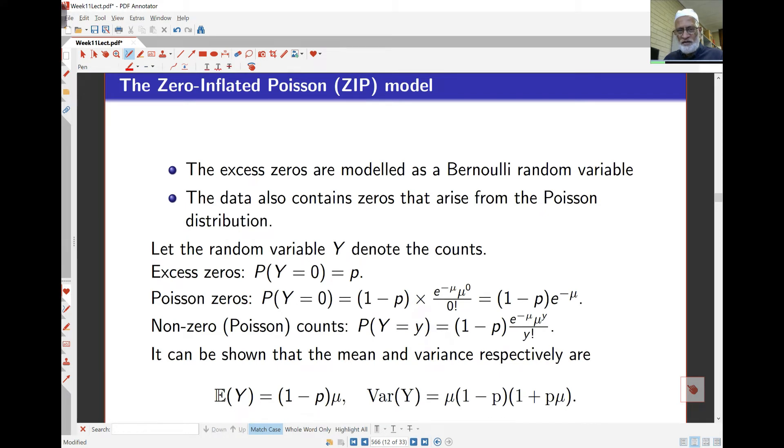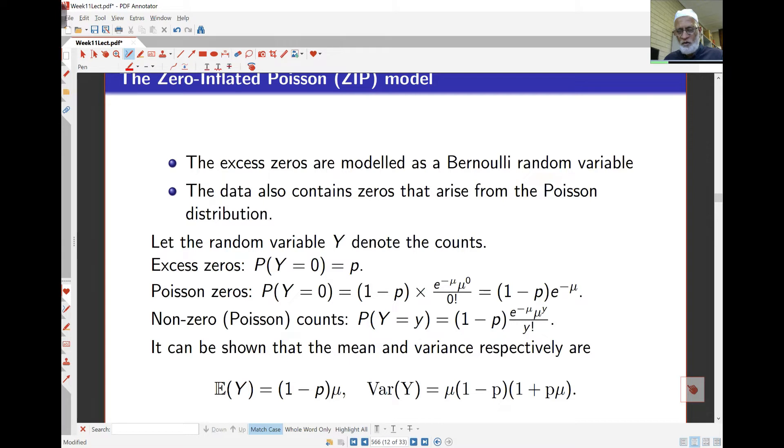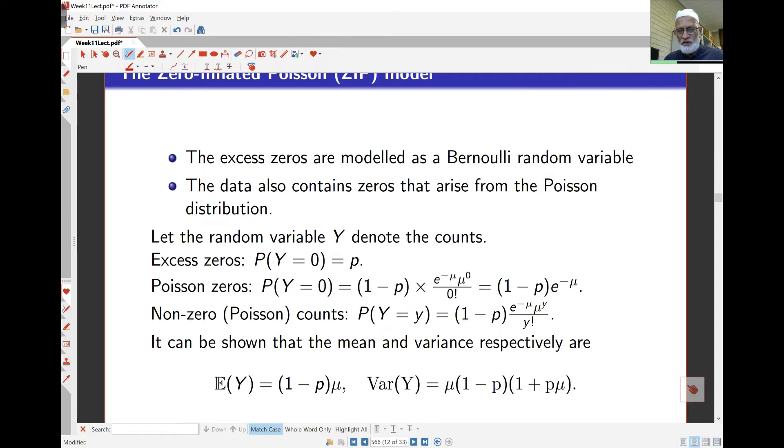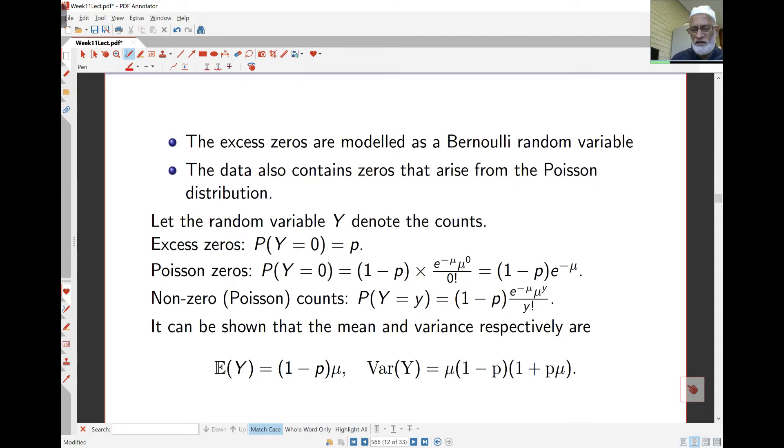So the way the zero-inflated model works is that we have the excess zeros in the model that is Bernoulli or binomial. And there are also zeros that would naturally arise from a Poisson process. So the zeros actually have two parts to the model. The first part is the excess zeros are actually just probability with probability P over here. And the Poisson zeros are the usual Poisson distribution here. Now there is a 1 minus P here. This is essentially also more properly called a mixture model.